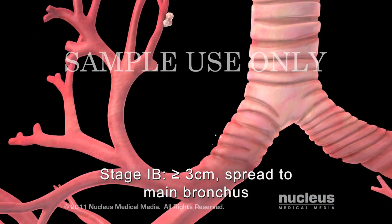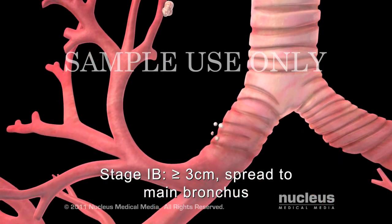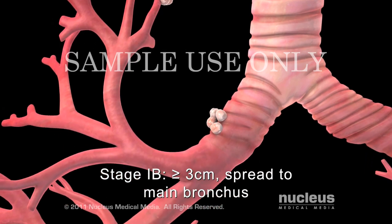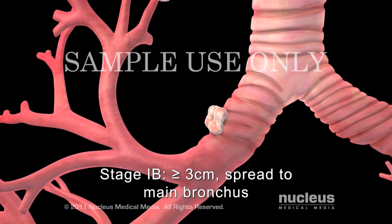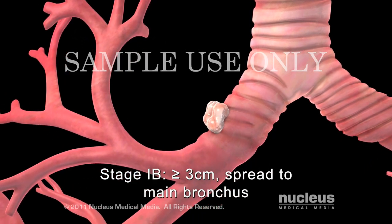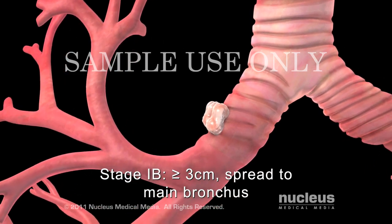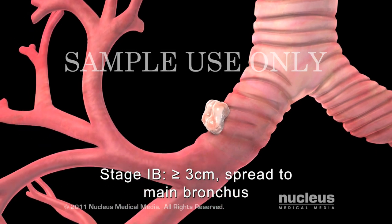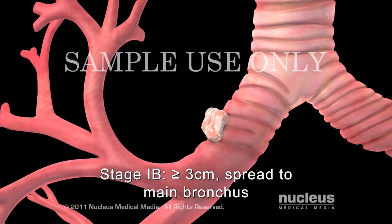In stage 1b, the diameter of the tumor is larger than three centimeters, or it has spread to a main bronchus, or has grown through the lung into the inner layer of the pleura.